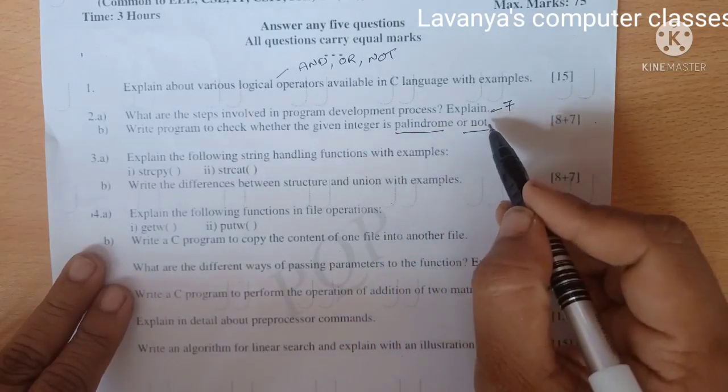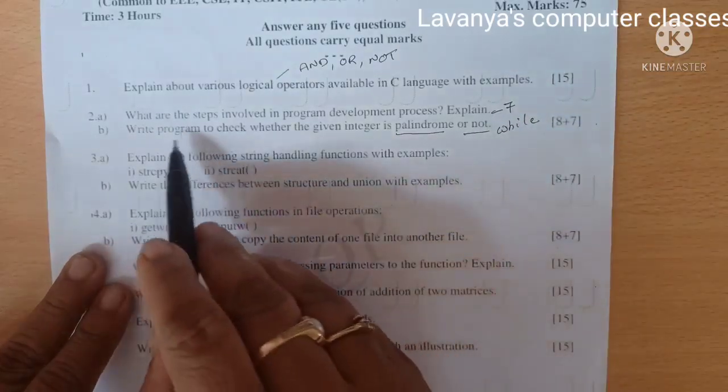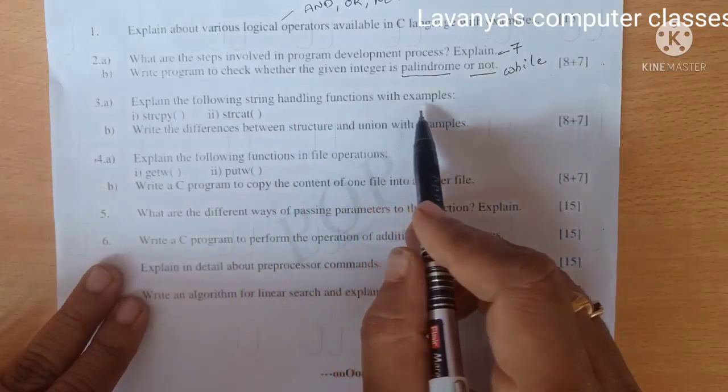B part is write a program to check whether the given integer is palindrome or not. Very important question. This is coming under example for while loop also.